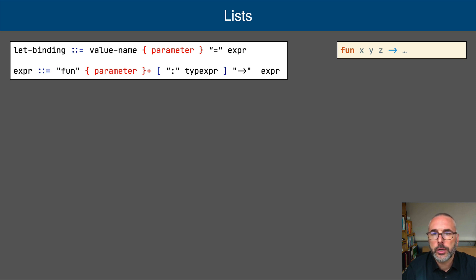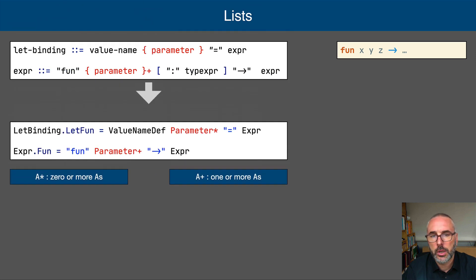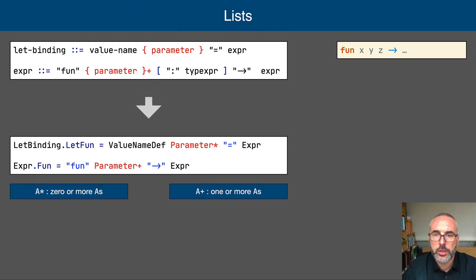OBNF uses the curly brace syntax to indicate sequencing. For example, a let binding of a function definition takes zero or more parameters, and a function literal takes one or more parameters. In SDF3, these are expressed using Kleene star and Kleene plus, respectively.